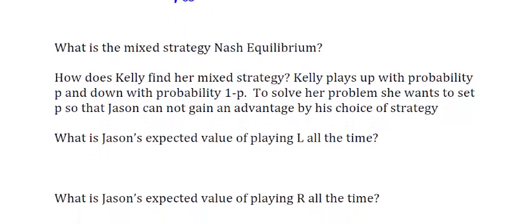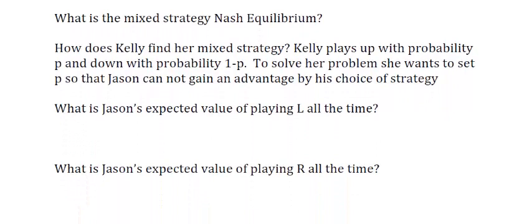We want to find the mixed strategy equilibrium, and we're going to do this one player at a time. Starting with Kelly: in her mixed strategy, she is going to play up with probability P and down with probability 1 minus P. To solve her problem, she wants to set P so that Jason cannot gain an advantage by his choice of strategy — that is, Jason's payoff should be the same whether he plays left or right.